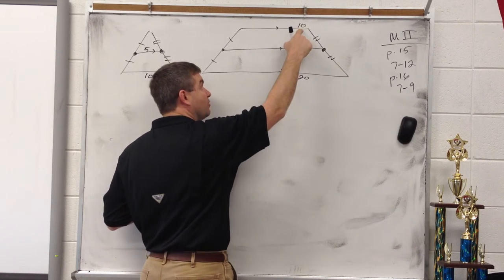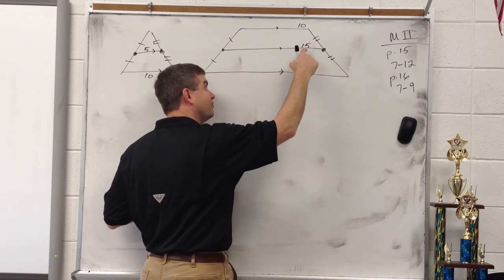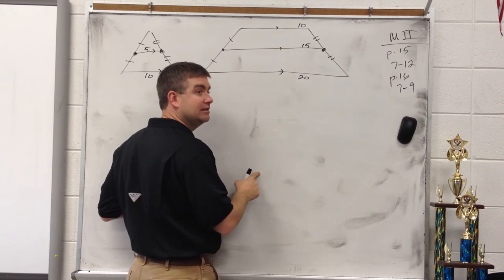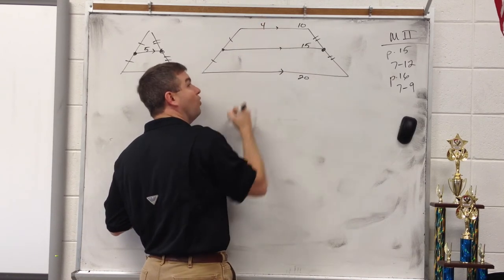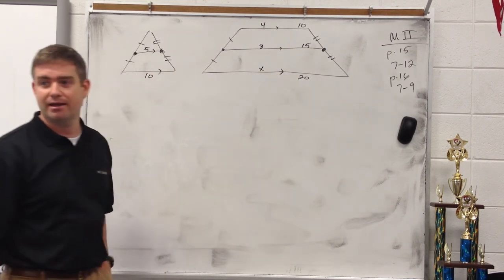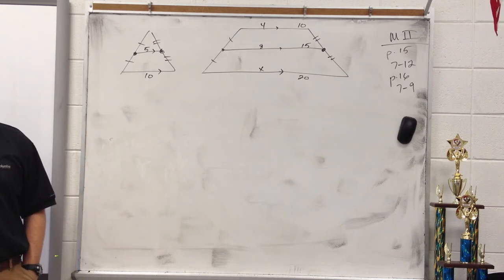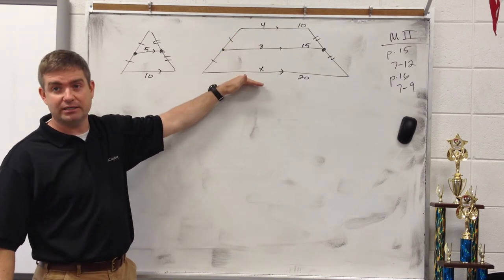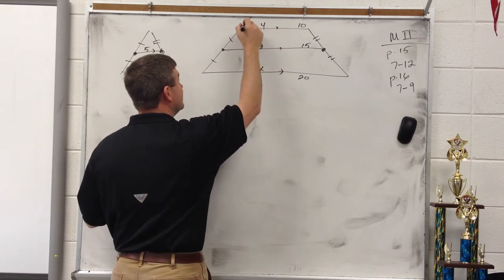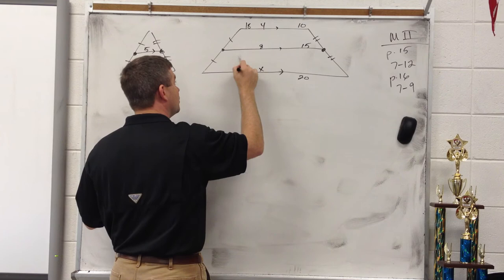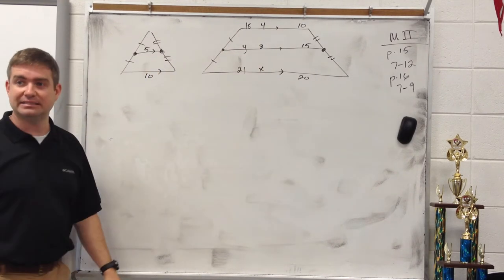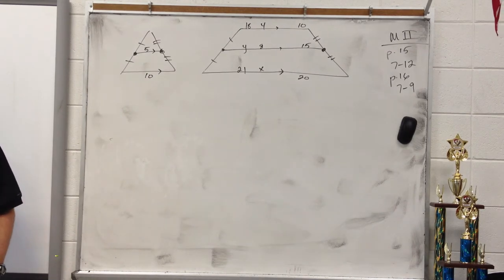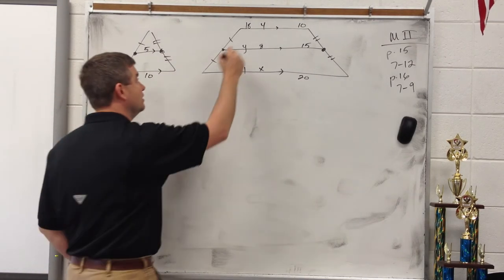Here's a question: if the bases are 10 and 20, you increased from 10 to 15 by 5, and from 15 to 20 by 5 — that will always be the case. If the bases are 4 and 8, X would be 6, because you increase by 2 each time. If the bases are 18 and 21, Y would be 19.5 — it's okay to have a decimal when you divide an odd sum by 2.